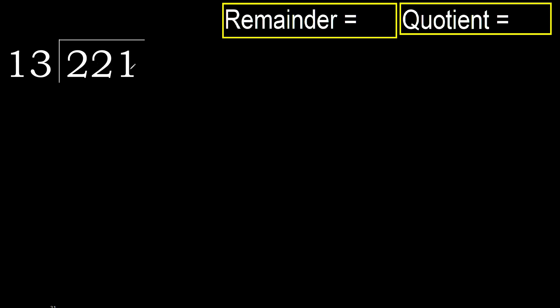221 divided by 13. 2 is less, therefore next. 22 is not less, therefore with 22: 13 multiplied by which number is nearest to 22 but not greater? 13 multiplied by 2 is 26, which is greater. 13 multiplied by 1 is 13, which is not greater. Subtract: remainder is 9.